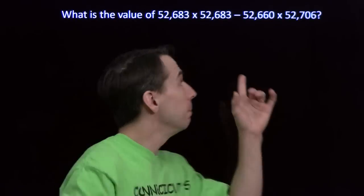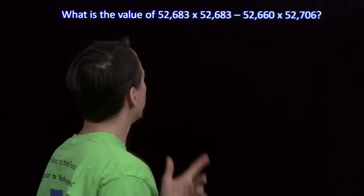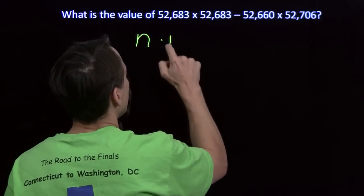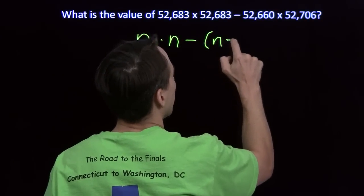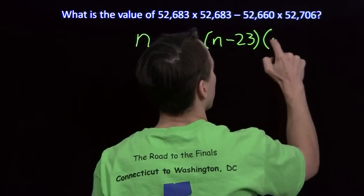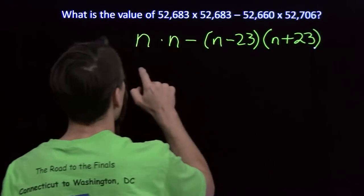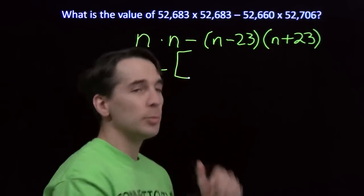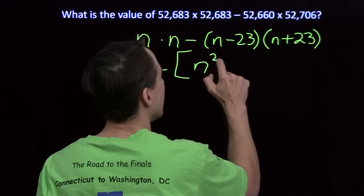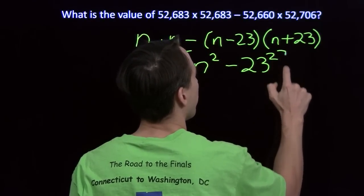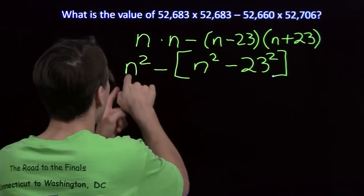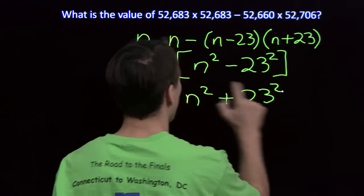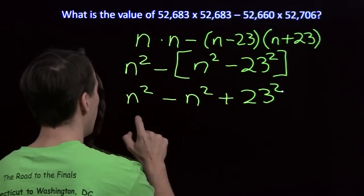So we're going to put a variable in for the middle number — 552-something — I'll call it n. We've got n times n minus the product of (n minus 23) times (n plus 23). n times n is n squared. And (n minus 23) times (n plus 23) — hey, this is just the difference of two numbers times the sum of those same two numbers. We know what happens: this comes out to the difference of the squares, n squared minus 23 squared. So now we have n squared minus (n squared minus 23 squared), which gives us minus n squared plus 23 squared. The n squared terms cancel, and we're left with 23 squared.